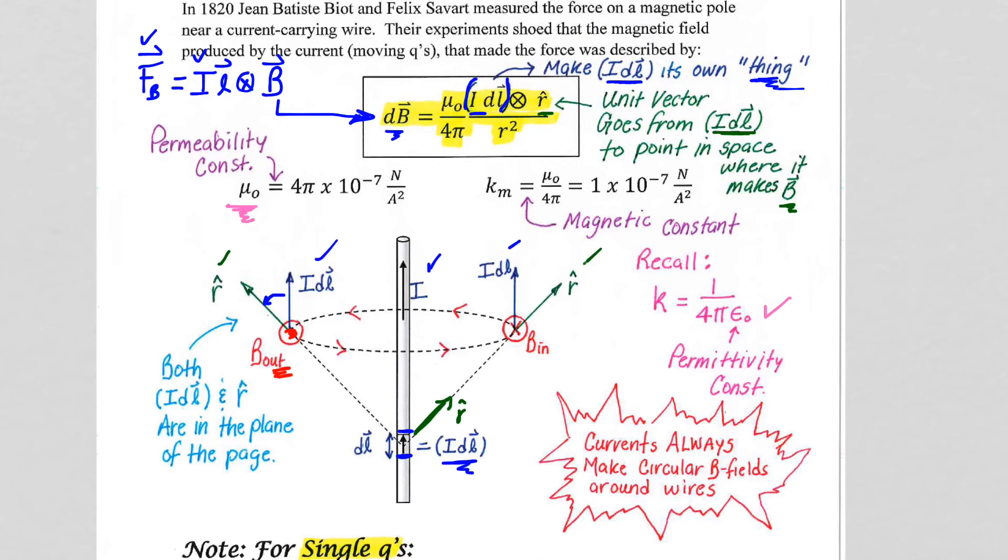Now, when we do IDL cross R hat, that's a thumb, right-hand thumb, into the paper. And if incrementally we did this all the way around the wire, hopefully that is a logic structure that you can see, that you will get a B field that makes a circle around the wire.